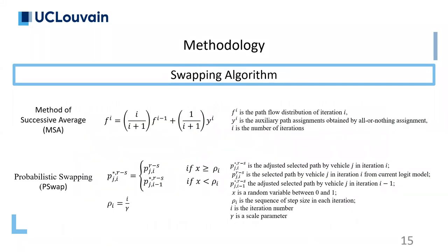Here we have some information about the swapping algorithm. The core idea is that not all vehicles should necessarily change their route in each iteration; instead, only a fraction of vehicles are in the reassignment process. In the literature, the commonly used swapping algorithm is the method of successive averages (MSA), but it has many drawbacks. So we developed a new swapping algorithm by modifying the step size of MSA. The main difference between MSA and our algorithm, which is called P-swap, is that the step sizes are different in the P-swap algorithm.